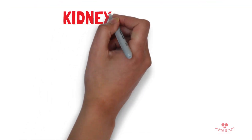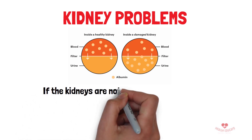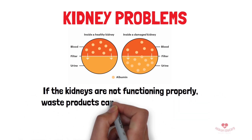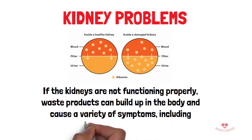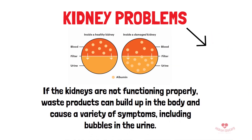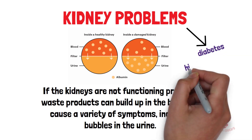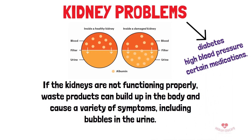In some cases, bubbly urine may be a sign of kidney problems. The kidneys are responsible for filtering waste products from the blood and producing urine. If the kidneys are not functioning properly, waste products can build up in the body and cause a variety of symptoms, including bubbles in the urine. Kidney problems can be caused by a variety of factors, including diabetes, high blood pressure, and certain medications.